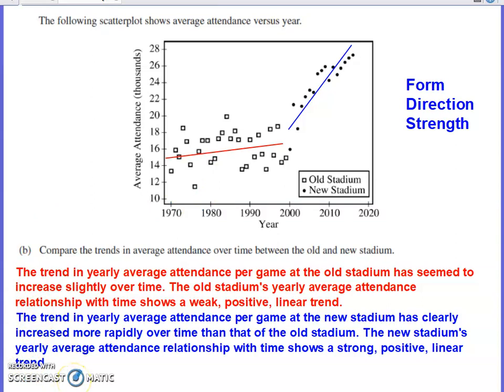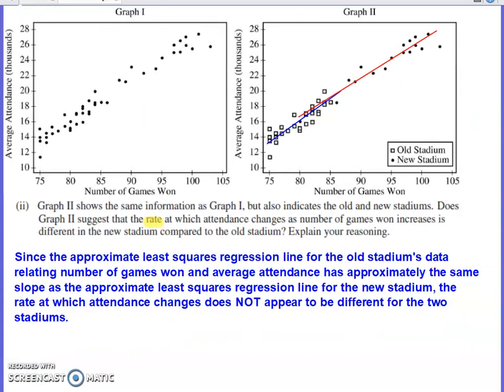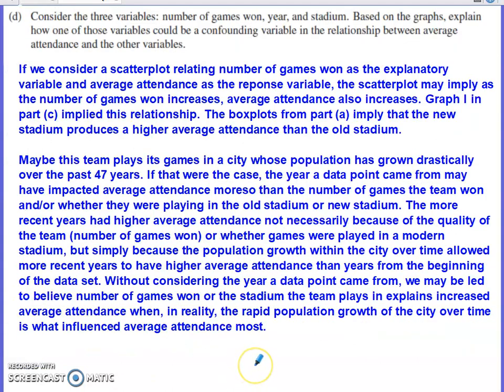Before closing, you could have done something different. You could have related year and average attendance and then talked about how the other two variables could have been confounding. There's quite a bit of flexibility involved in part C. You just want to make sure you use context and have a lot of detail supporting the conclusion you are going with.